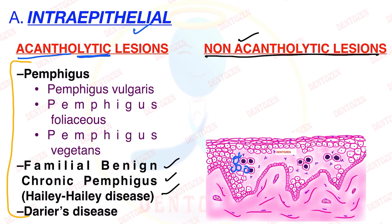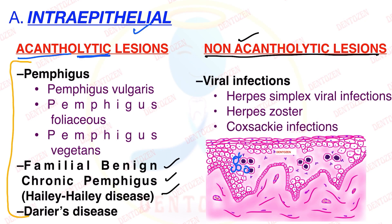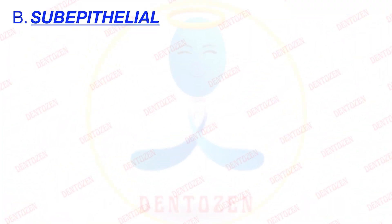If there is no cell destruction, these are called non-acantholytic lesions. Examples of non-acantholytic intraepithelial conditions include viral infections such as herpes simplex, herpes zoster, and coxsackievirus infection. So within intraepithelial lesions, we have two categories: acantholytic, where cell destruction occurs, and non-acantholytic, where it does not.